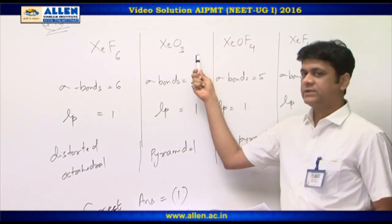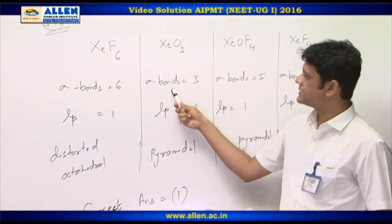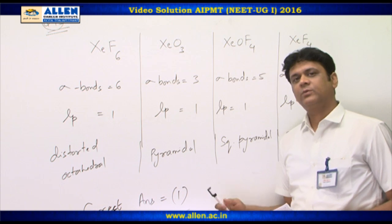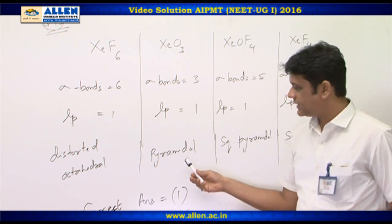In the second molecule xenon trioxide, sigma bonds are 3 and the number of lone pairs are 1. So, the shape should be pyramidal.